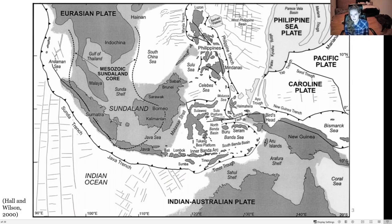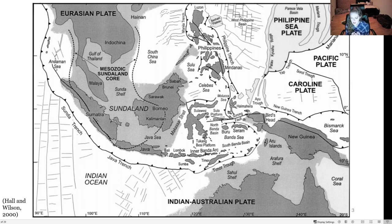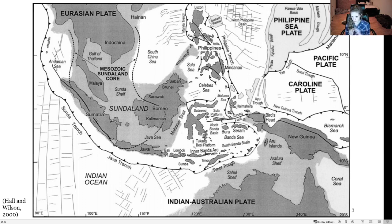Indonesia is one of the most tectonically complex places in the entire world. On the western side you have the Java Trench and the Sunda Trench and the Indian Australian plate colliding with the overriding Eurasian plate and subducting beneath it — subduction on that side is fairly standard. For this presentation we're mostly going to be focusing on the eastern side because it is a lot more complicated and convoluted in its plate relationships and geometries. We're going to look at the shapes of the plates, how they got to be that way, and their evolution over time.